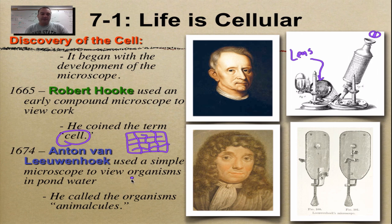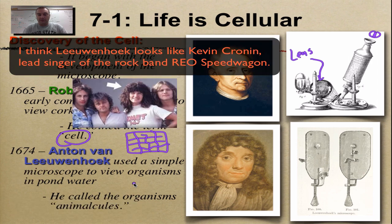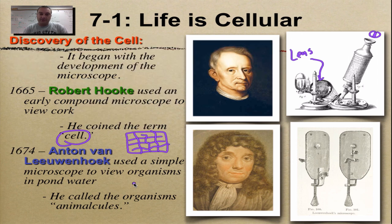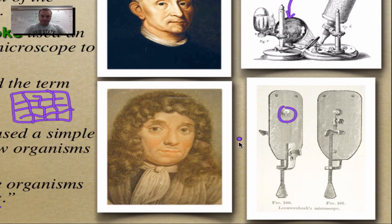We also have a Dutch guy named Anton van Leeuwenhoek. He was the first guy to basically look at pond water under a microscope. Think of the first time in elementary or middle school you got to look at pond water — how cool it was to see those little protozoa swimming around. This gentleman was probably the first person ever to observe that. He called these guys "animalcules." His microscope is essentially just a magnifying glass; he would put a drop of water on a point, and use two screws to move the object up/down and in/out to bring it into focus, then look through the lens.